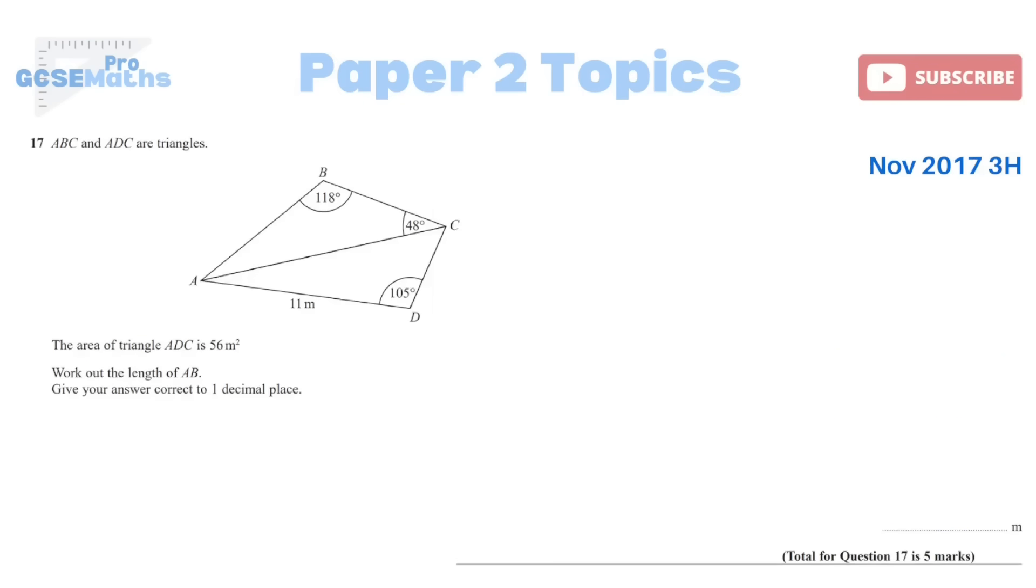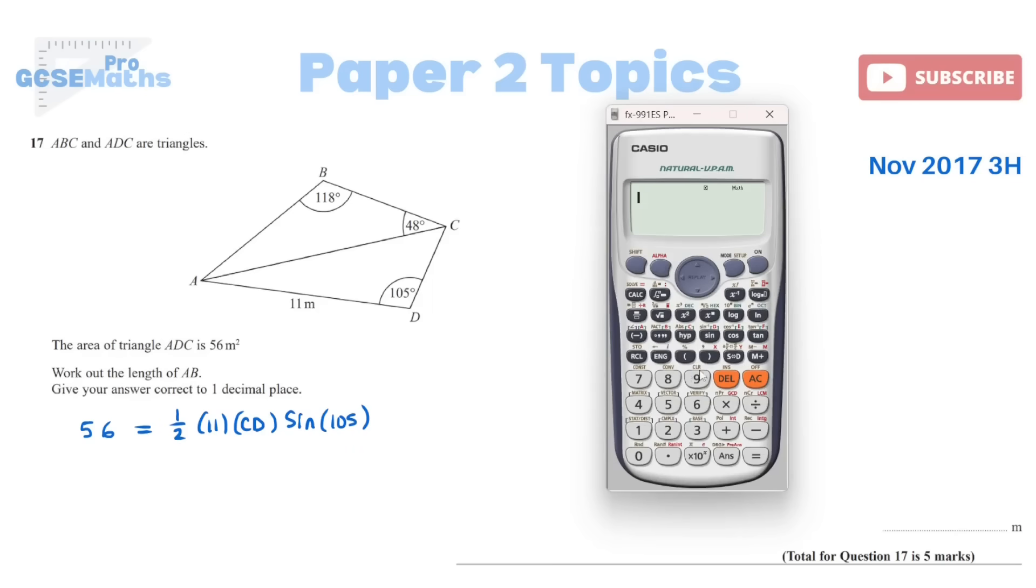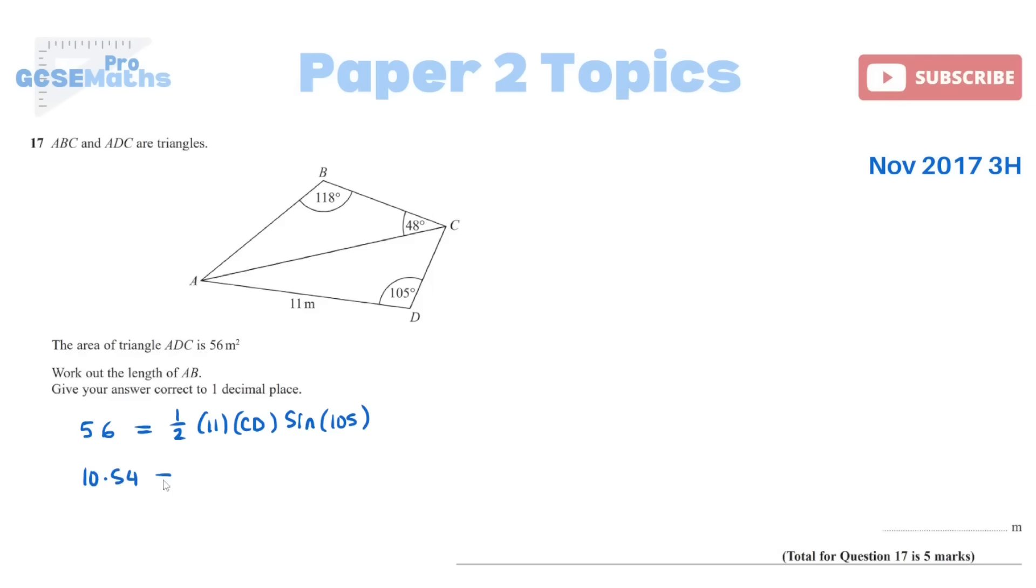Our last topic is sine rule, cosine rule, trigonometric area of a triangle. We've got ABC and ADC are triangles. The area of triangle ADC, so the bottom one, is 56 metres squared. Work out the length of AB. So the area of a triangle, using the trigonometric format, because we don't have perpendicular heights, is a half AB, so that would be 11, times by this side, we don't know. So I'm just going to call it CD, sine of the angle between them, which is 105. Now, actually, I do know that that equals 56, so I'll put that in as well. I might as well rearrange the equation. So that leaves me with just CD. So I get 10.54 for the side CD.